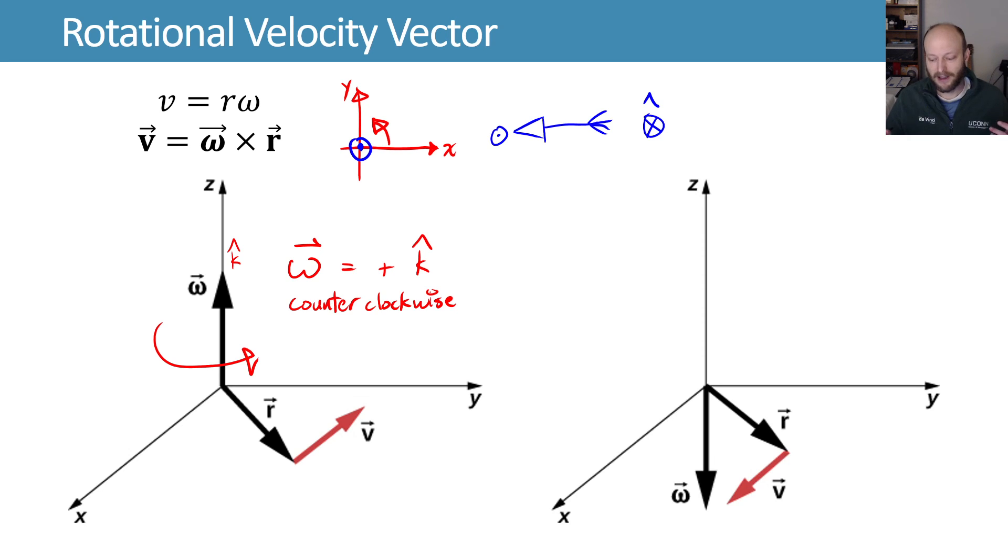Similarly, if we have my omega pointing down, I can point my thumb with the omega, and now it'll curl in the direction that we're talking about. So when you look at this from the top, that will be a clockwise rotation. And might as well draw this in here as well. That's clockwise, which means that my thumb is pointing away from the screen as we do that.